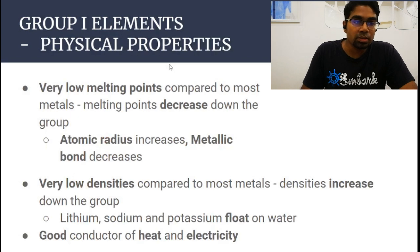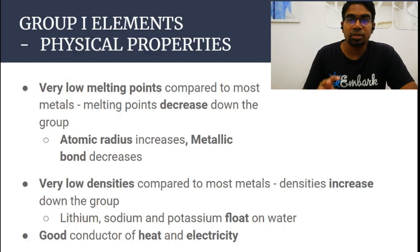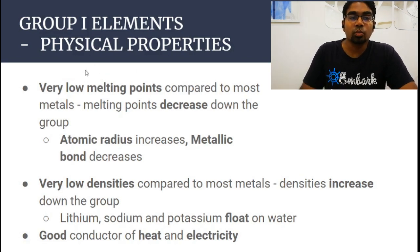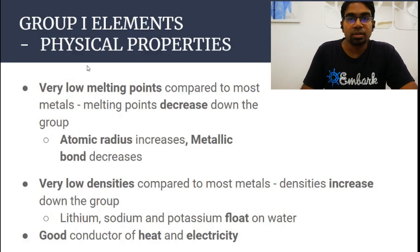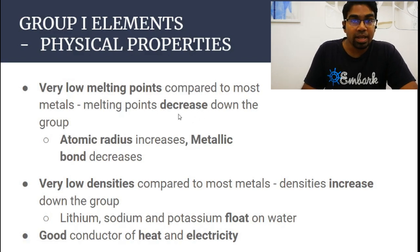Looking at the physical properties — when we typically think of metals, metals have a very high melting point. The typical metals are actually the transition metals. When we talk about group 1 metals, a lot of their properties are opposite. Just like they are actually very soft, here they also have a very low melting point compared to most metals. And as we go down the group, the melting point decreases. This is opposite to group 18 elements.